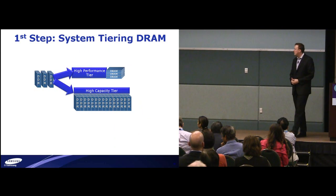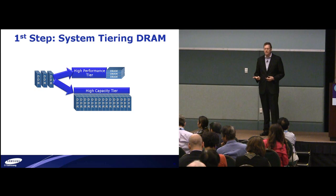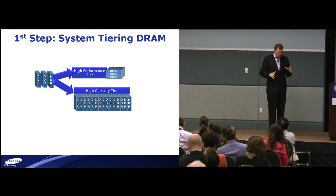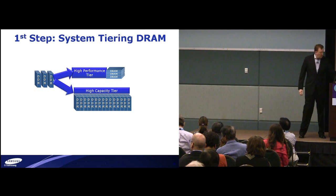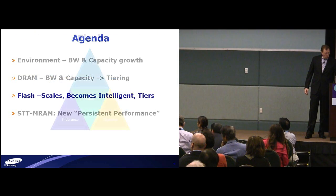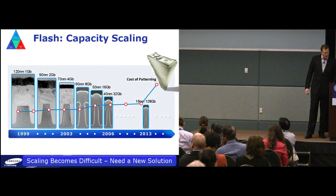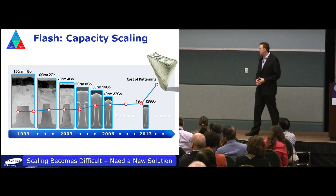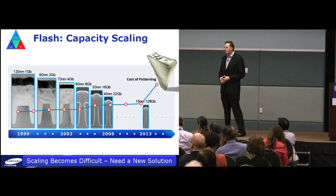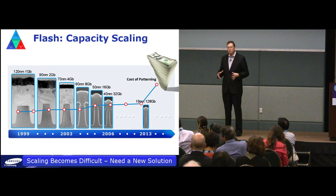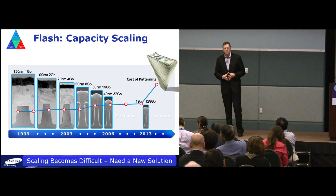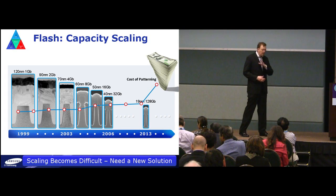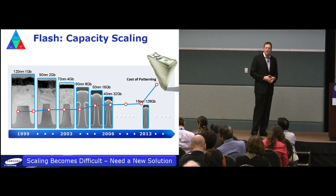So the first step is we're going to split memory into a high performance tier and a high capacity tier. Now let's look at flash technology and some of the challenges we see there. Two-dimensional scaling in flash has gotten to be exceptionally difficult. Shrinking the fundamental storage structure of flash has gotten harder and harder. There are ways to do this that would be exceptionally expensive — the cost of patterning would be astronomical, and that would destroy the nice cost curve we've provided to the industry for flash all these years.